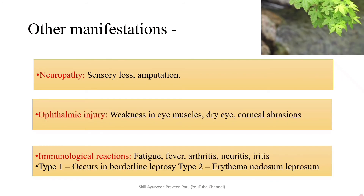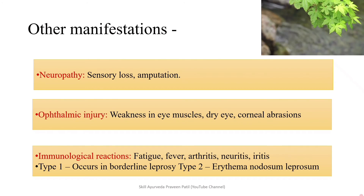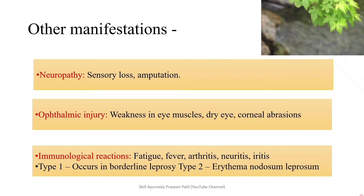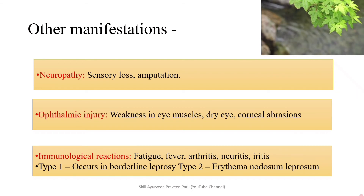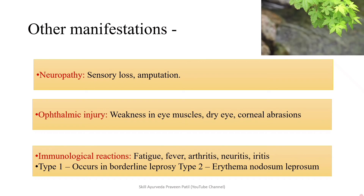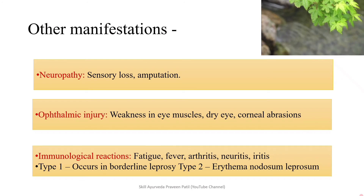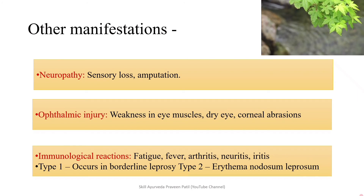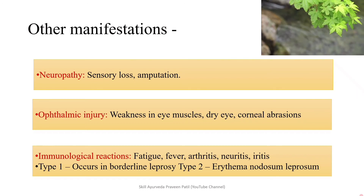Ophthalmic injury occurs because the organism grows in cooler areas — this includes weakness in the eye muscles, dry eye, and corneal abrasions. Regarding immunological reactions that may occur when treatment is started: Type 1 involves a Type 4 hypersensitivity reaction, and Type 2 involves a Type 3 hypersensitivity reaction. Other immunological reactions include fatigue, fever, arthritis, and neuritis, which are the most common features.